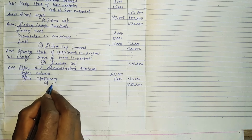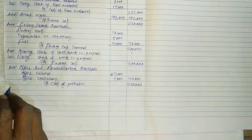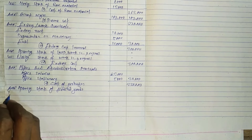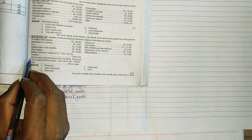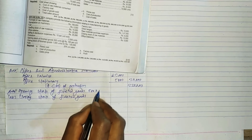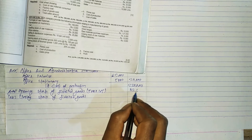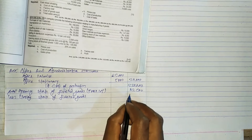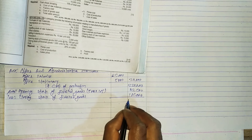Now we calculate the cost of production. We add the opening stock of finished goods and subtract the closing stock of finished goods. Opening stock of finished goods: 500 units at the rate of Rs.165 per unit — 500 into 165 equals 82,500. Closing stock of finished goods: 1000 units at Rs.165 — gives 1,65,000. The cost of production comes to 2,47,500.